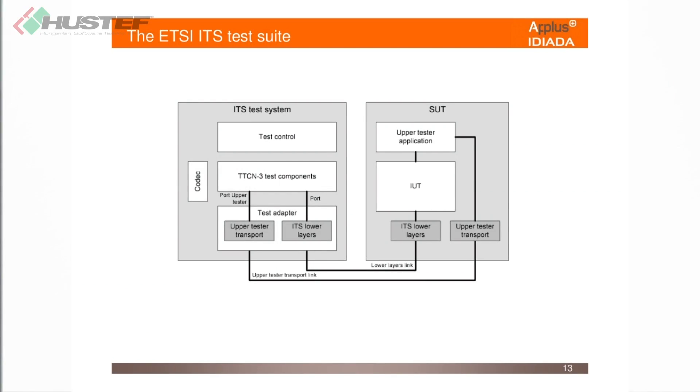This is how the ITS test system works and how it's validated. You have the SUT — the system under test — which has your ITS stack. There are two channels of communication. One channel works through UDP, sending to the SUT the actions you want it to perform — for example, sending a message with specific fields at a specific location via GeoNetworking. The SUT then responds through the lower-layer G5 link, and with your TTCN3 executable and TITAN, you check if that is working correctly.